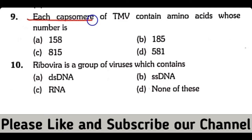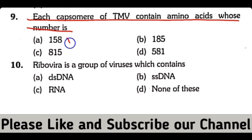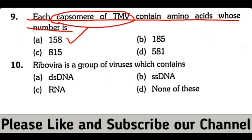Each capsomer of TMV contains amino acids whose number is 158, 185, 815, or 581. So the correct answer is option A. The capsomer of TMV or tobacco mosaic virus contains 158 amino acids.